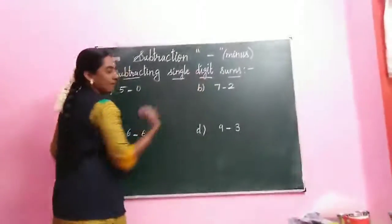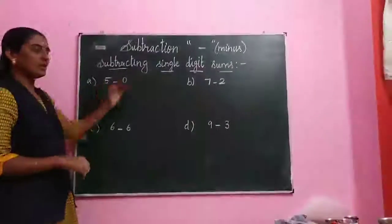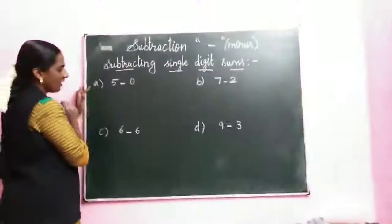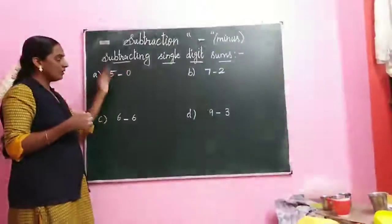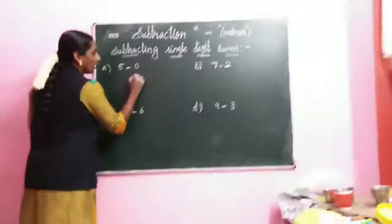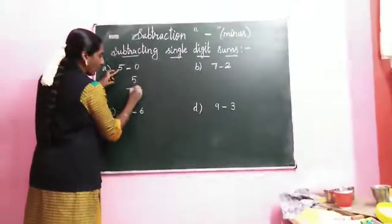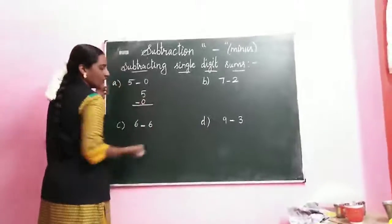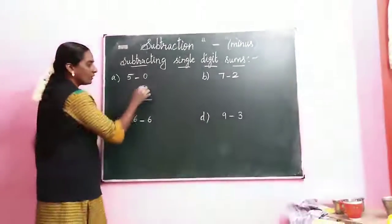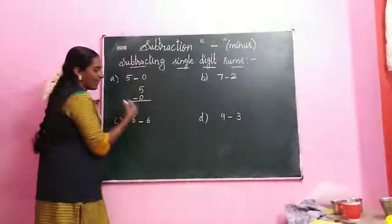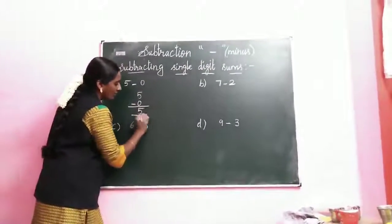Subtracting single digit sums. We are using the properties for single digit sums. First sum: 5 minus 0. Using the property — when we subtract 0 from any number, the answer is the same number. So 5 minus 0 equals 5.